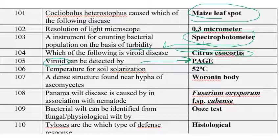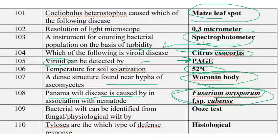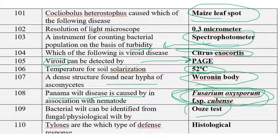The temperature required for soil solarization is 52 degrees centigrade. A dense structure found near the hypha of ascomycetes is the Woronin body. Panama wilt or Fusarium wilt of banana is caused by Fusarium oxysporum f. sp. cubense and is associated with nematodes also. Bacterial wilt can be identified from fungal physiological wilt based on the ooze test.